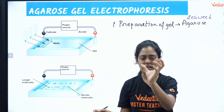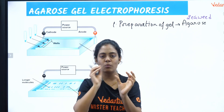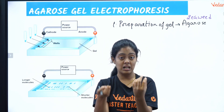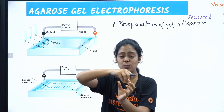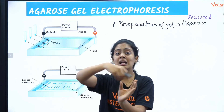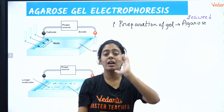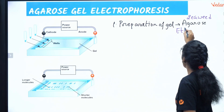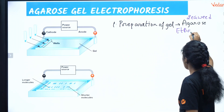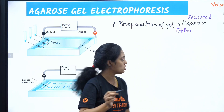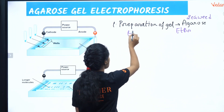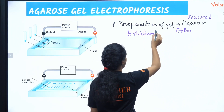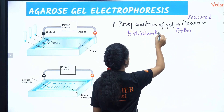Take a 100 ml beaker and add 100 ml distilled water. Add just one gram or two grams of agarose and dissolve it well by boiling. When dissolving, I also add a stain called ETBR — ethidium bromide. This is a very, very important thing. ETBR is used to stain DNA.